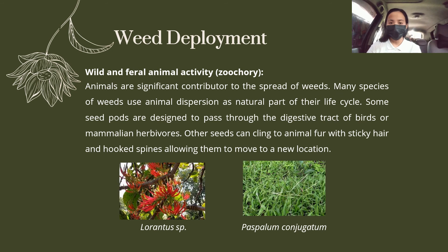The second mechanism of weed deployment is wild and feral animal activity, or zoochory. Animals are a significant contributor to the spread of weeds. Many species of weeds use animal dispersal as a natural part of their life cycle. Some seed pods are designed to pass through the digestive tract of birds or mammalian herbivores, while other seeds cling to animal fur with sticky hairs and hook spines, allowing them to move to a new location.